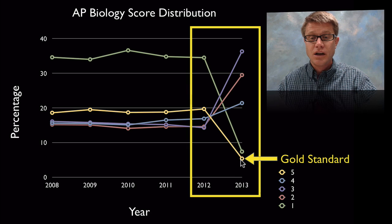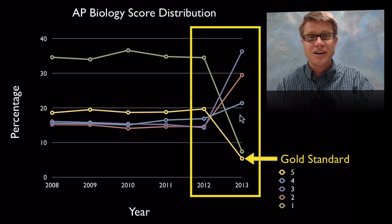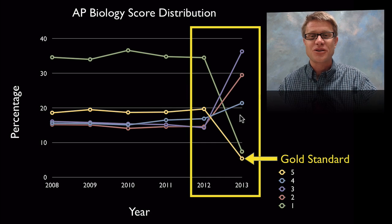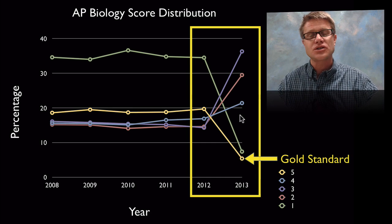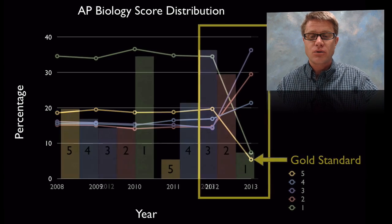A quarter of a million kids take it each year. And so it's not like between here and here students got dumber or smarter and got more threes. It's just that they changed the course, changed the test, and they changed the score distribution.